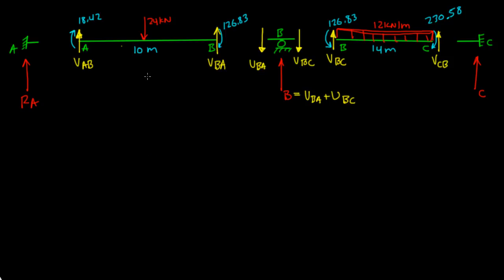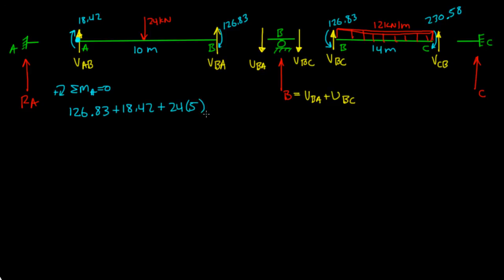To find V_ba, I take the moment about point a equal to zero, clockwise positive: 126.83 plus 18.42 plus the 24 kilonewton load at distance 5 meters, minus V_ba times 10 equals zero. Solving for V_ba gives 26.53 kilonewtons, positive, so our assumption was correct.